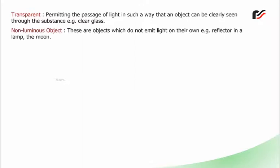Transparent: Permitting the passage of light in such a way that an object can be clearly seen through the substance, for example, clear glass. Non-luminous objects: These are objects which do not emit light on their own, for example, reflector in a lamp, the moon.